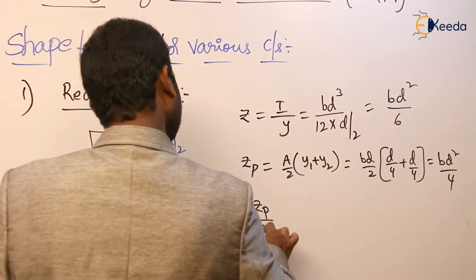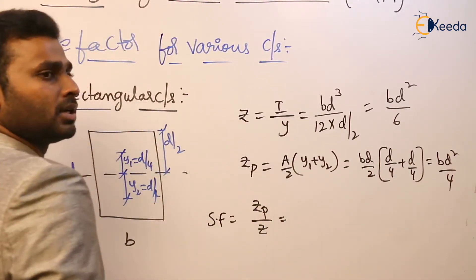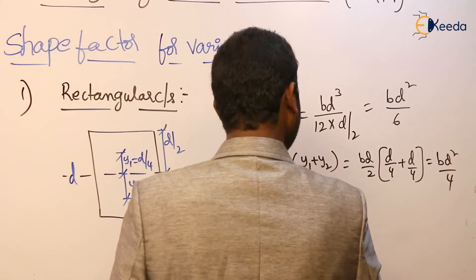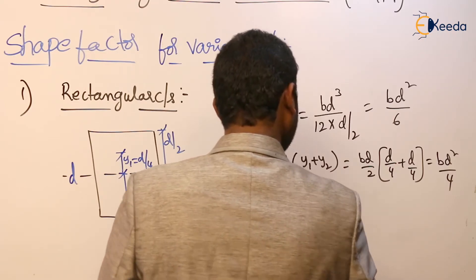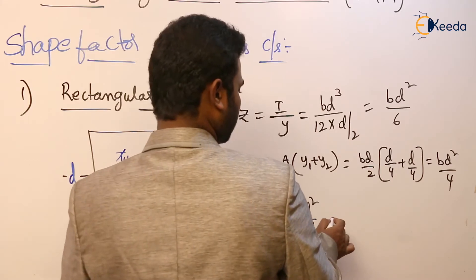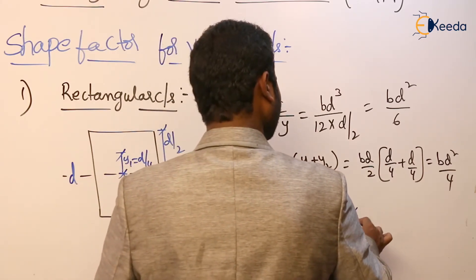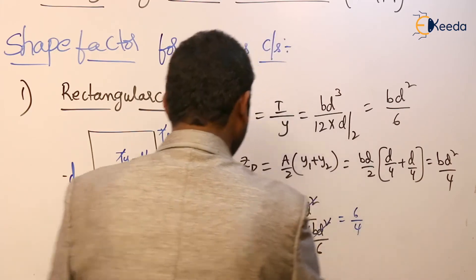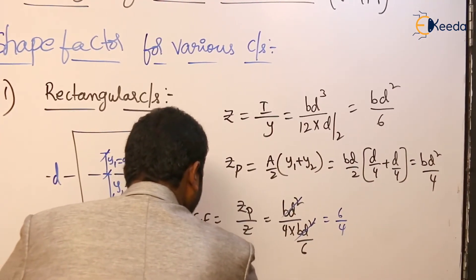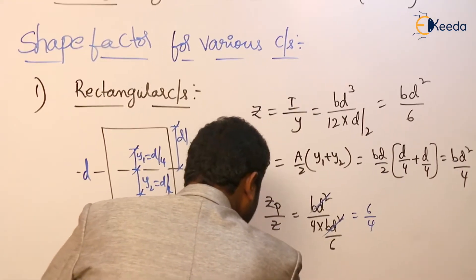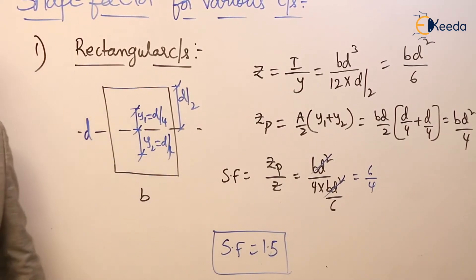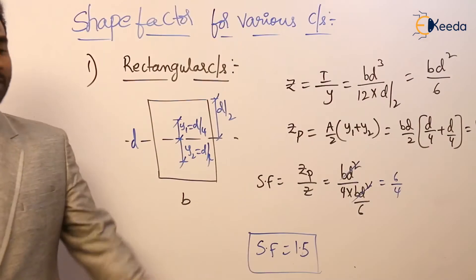Shape factor equals ZP by Z, which is (BD² by 4) divided by (BD² by 6). BD² cancels out, giving 6 by 4, which equals 3 by 2. So the shape factor for a rectangular cross section is 1.5.